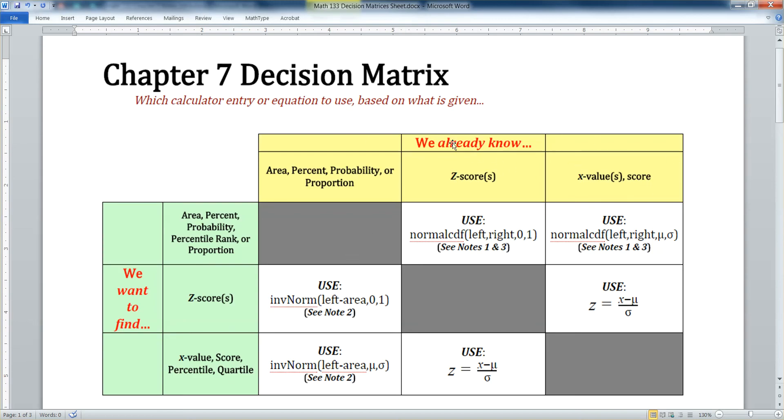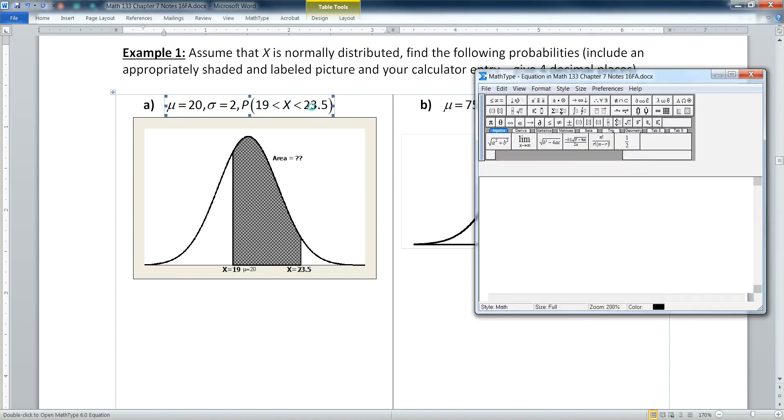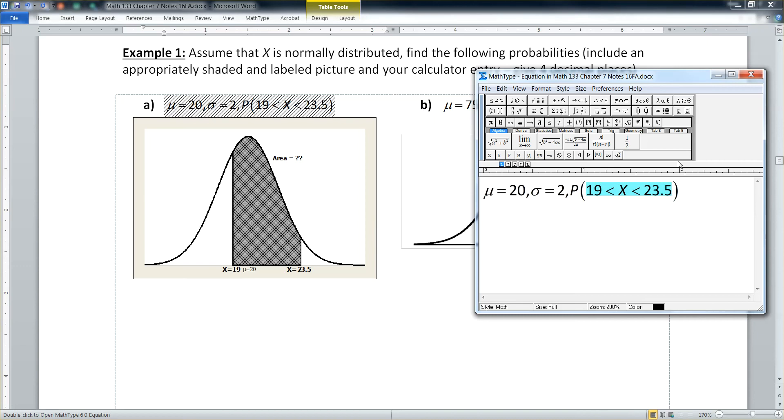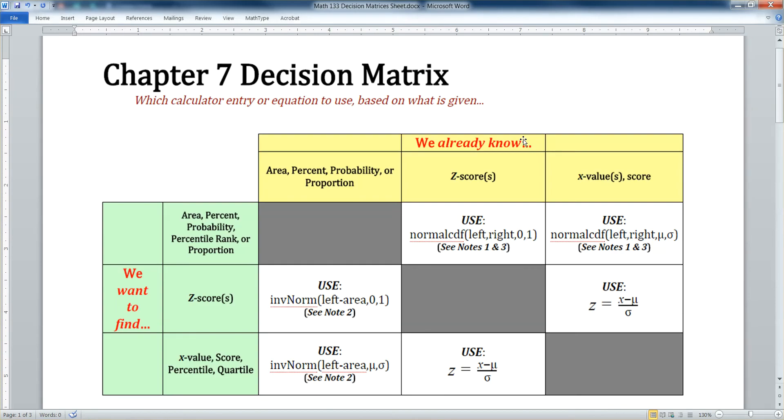Okay. So let's think about this. We want to find, so over here on the green side, we want to find the probability right up here at the top, the first row. We want to find probability. You can see it says area percent probability and so on. We already know up here on the yellow area, we already know x values. We know an x value of 19 and an x value of 23.5 because that's what this portion in the parentheses is telling us. X's are right there. So I know my x values and I want a probability right there.